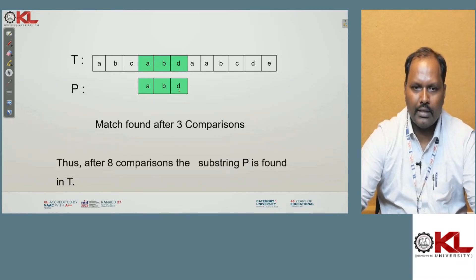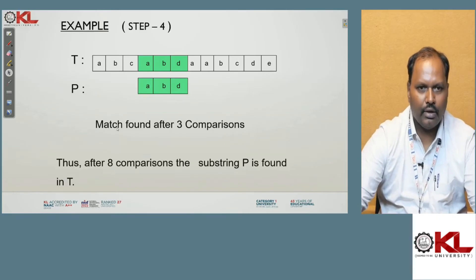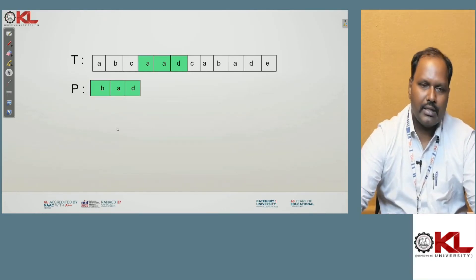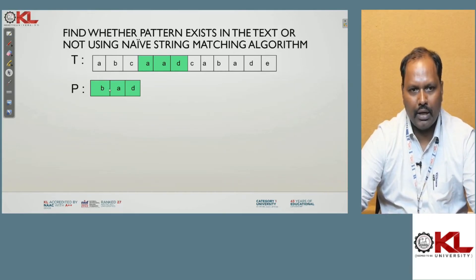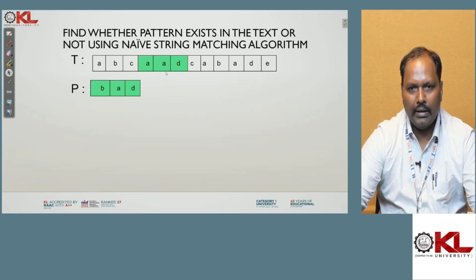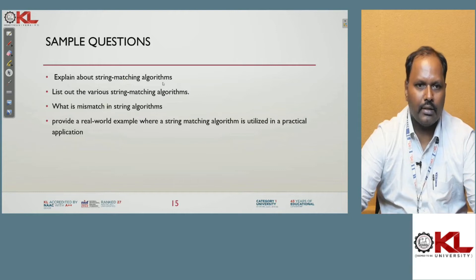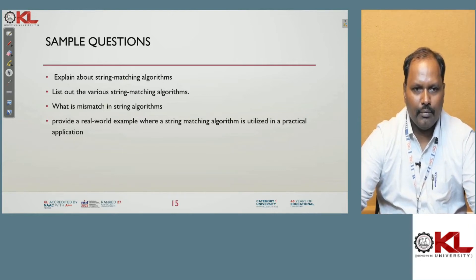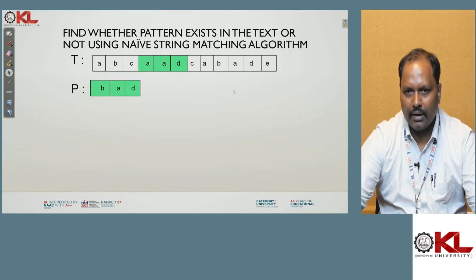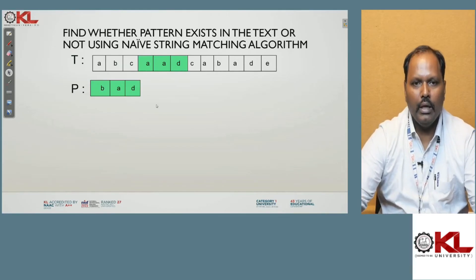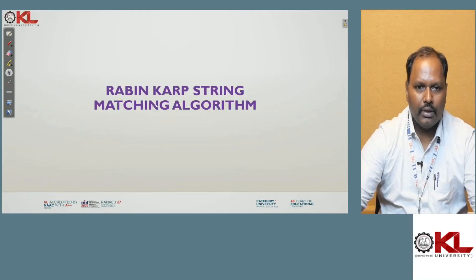One drawback of Naive string matching: the algorithm stops at the first occurrence only. Second and third occurrences may not be checked. This is the main drawback of the Naive string matching algorithm.